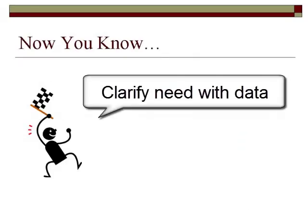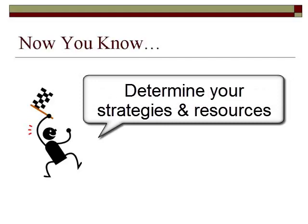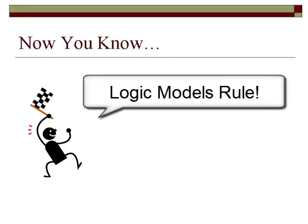By now, you know you must begin the monitoring process by clarifying your need with data, considering your long-term goals, and determining your strategies and resources. You also have knowledge of a tool that can help you lay out your short-term and intermediate outcomes and connect them to your long-term goals to help monitor the success of your program or initiative. Now that you have a general understanding of this planning tool and its components, Lesson 3 will walk you through several educational examples to help you create a logic model for your program or initiative.